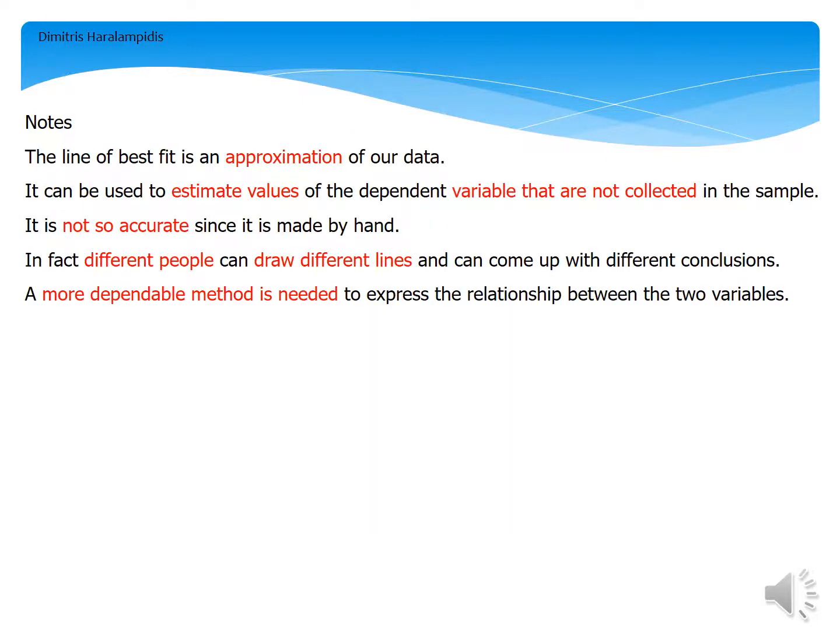We'll finish this presentation with some notes. The line of best fit is an approximation of our data. It can be used to estimate values of the independent variable that are not collected in the sample. But it is not so accurate, since, as we said, it is made by hand.